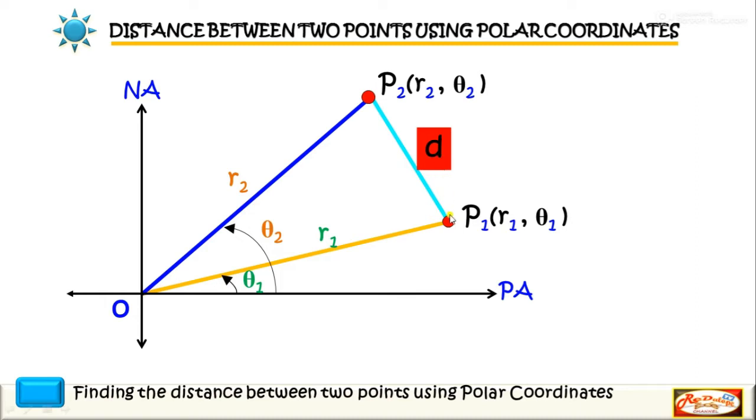Now the distance d between point 1 and point 2 having polar coordinates is easily found by solving a triangle whose two sides are given. The given two sides are r2 and r1 with the included angle theta2 minus theta1.